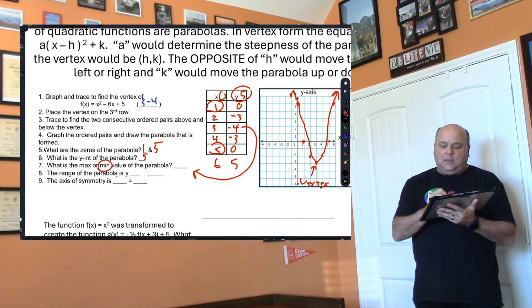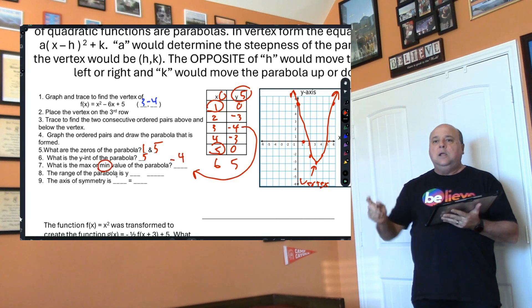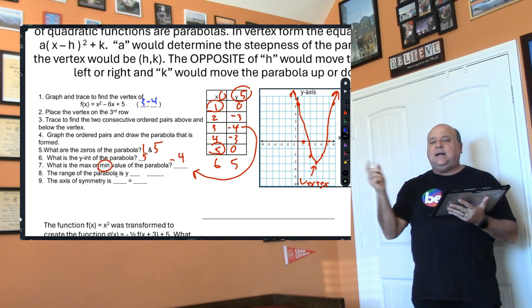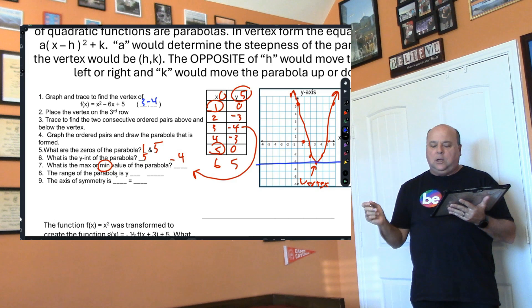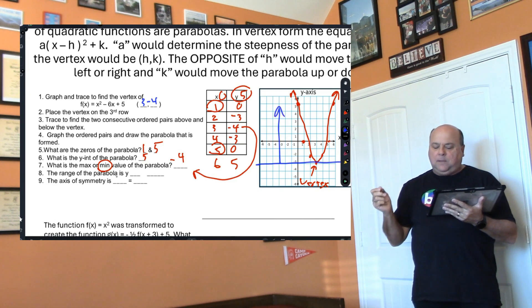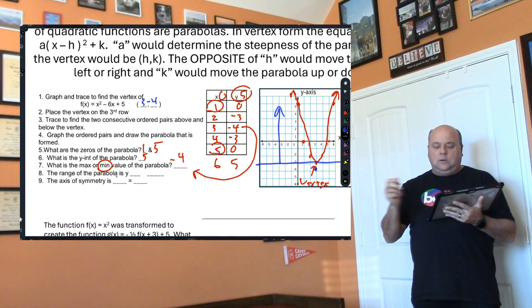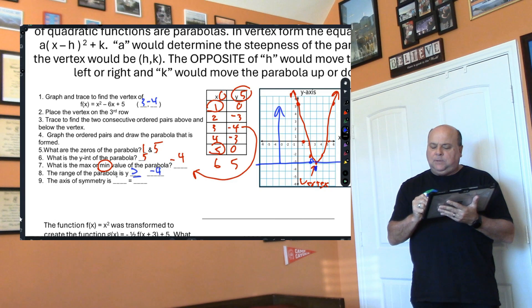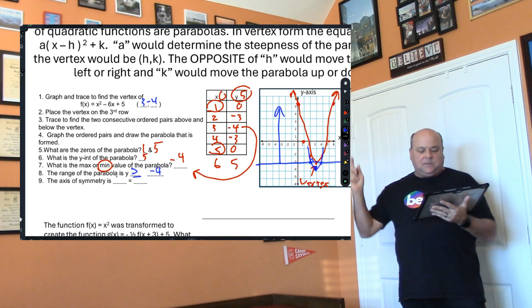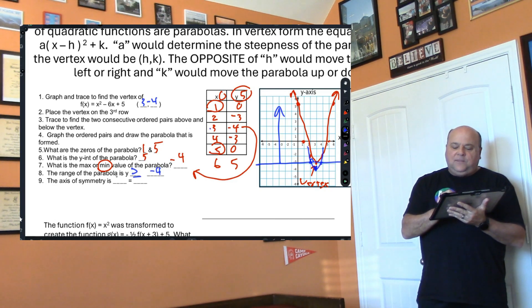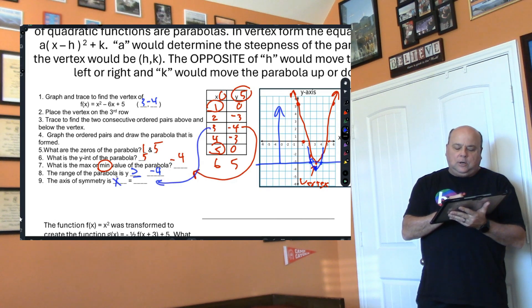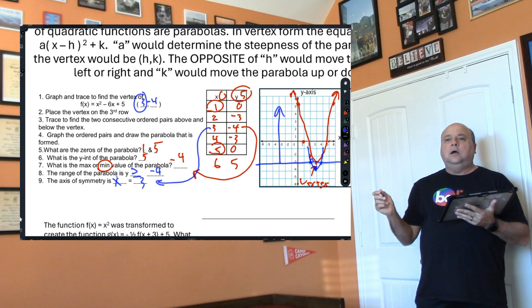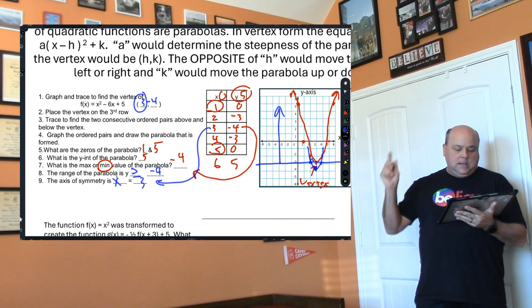The range—remember the range is what the y's could be. The y's will never go below -4, they're always going to be above it. So my range is greater than or equal to -4. Technically these dots should be here, here, and here. I messed up the dots. Lastly, the axis of symmetry is the x of the vertex of the parabola.